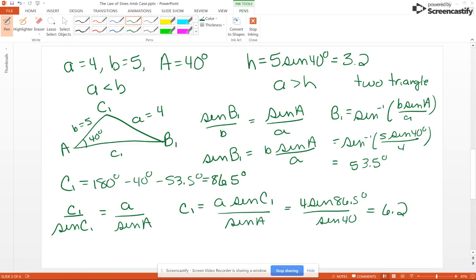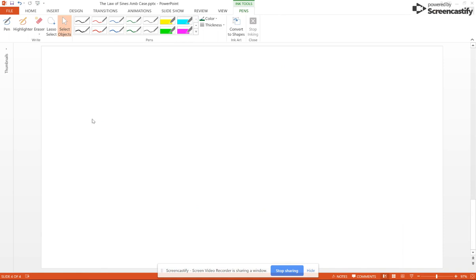Now for our second triangle, we're going to have our angle A equal 40, our side A equal 4, and our B equal 5.